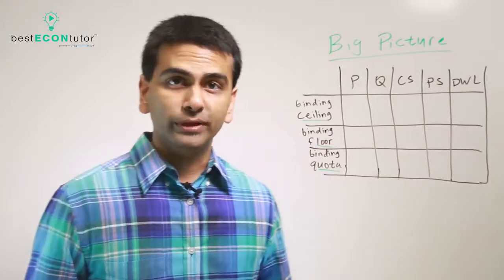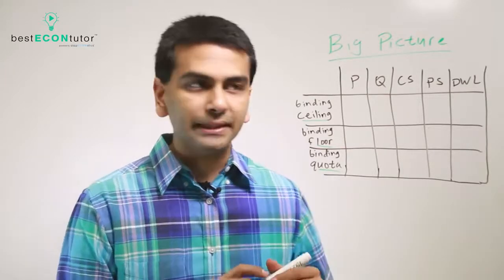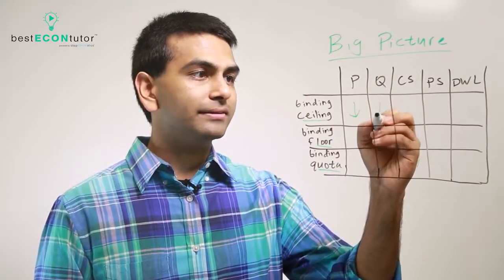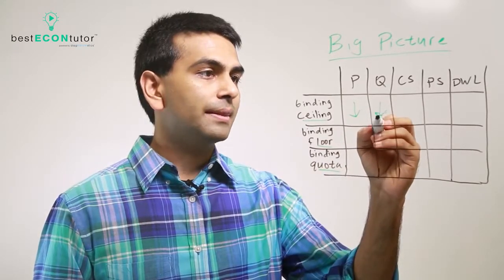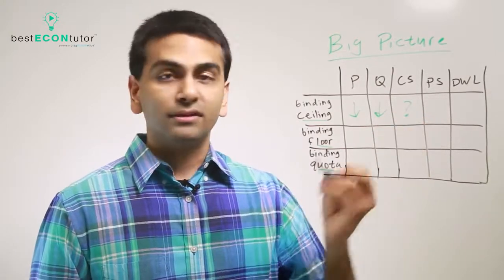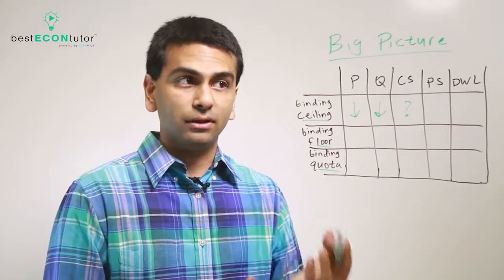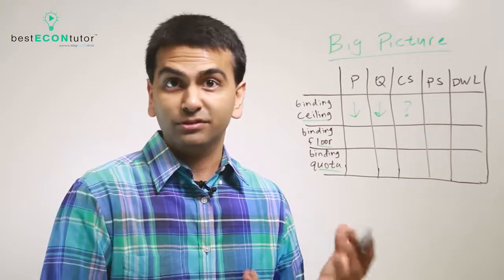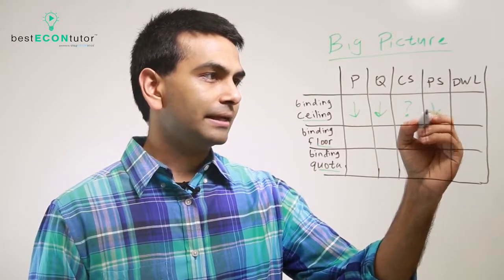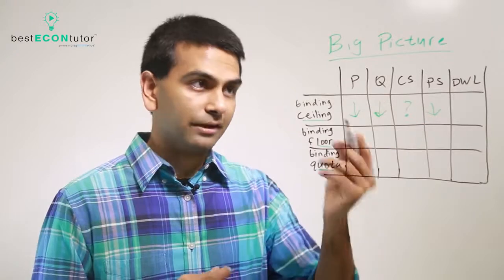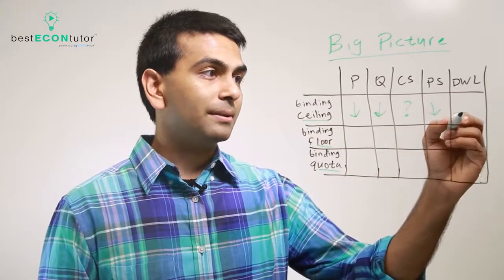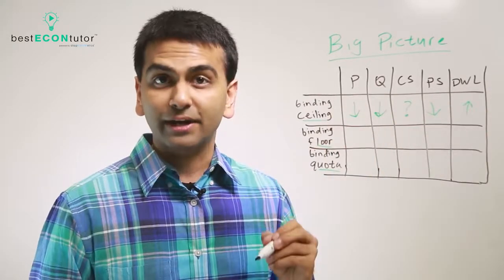Now for the big picture: with a binding price ceiling, it lowered the equilibrium price and also lowered the equilibrium quantity transacted. Consumer surplus was ambiguous — consumers who got to pay the lower price were better off, but those who could no longer buy the product were worse off. Producer surplus definitely went down, because producers faced both a lower price and a lower quantity sold, and deadweight loss increased from zero to whatever that triangle is.